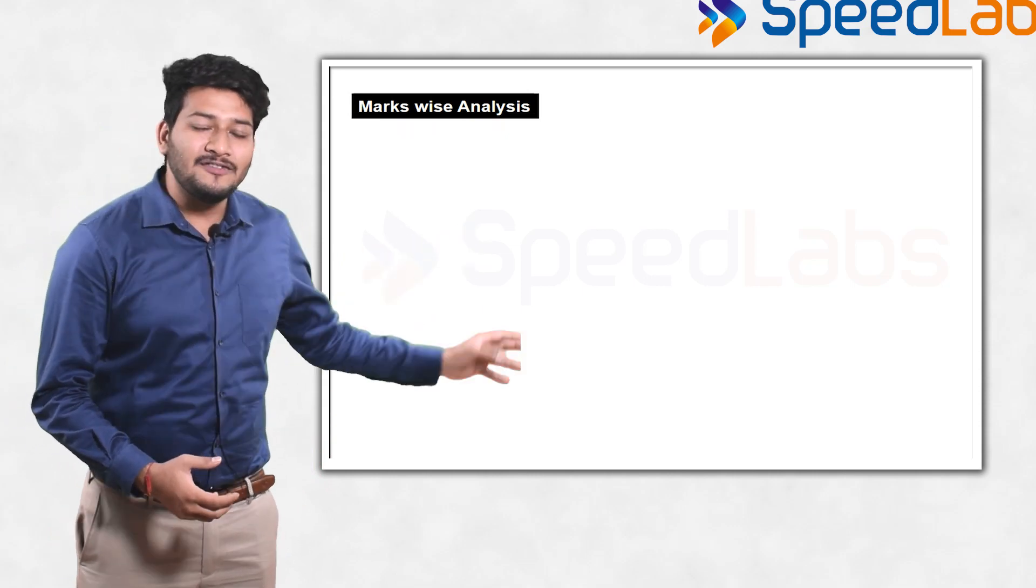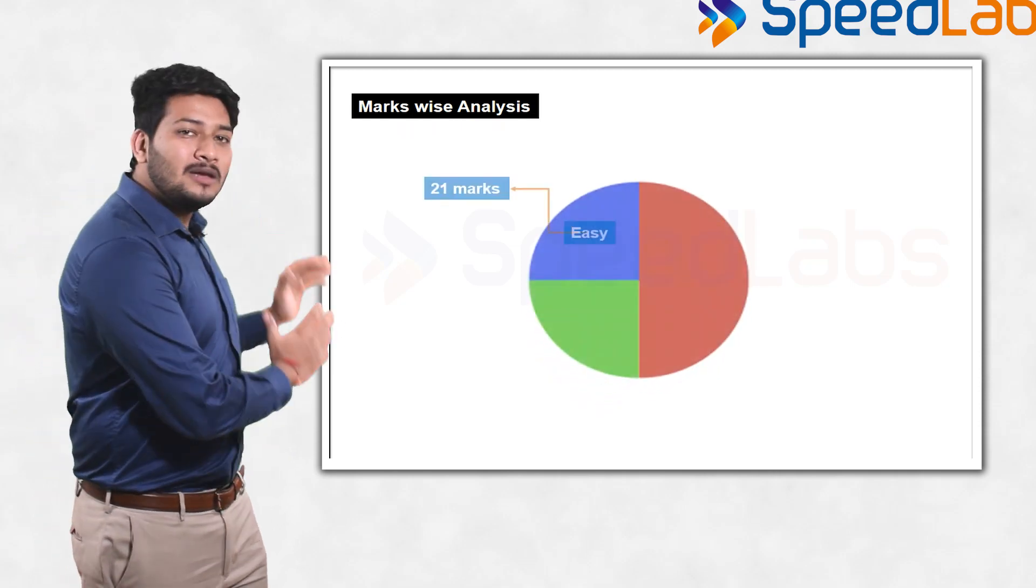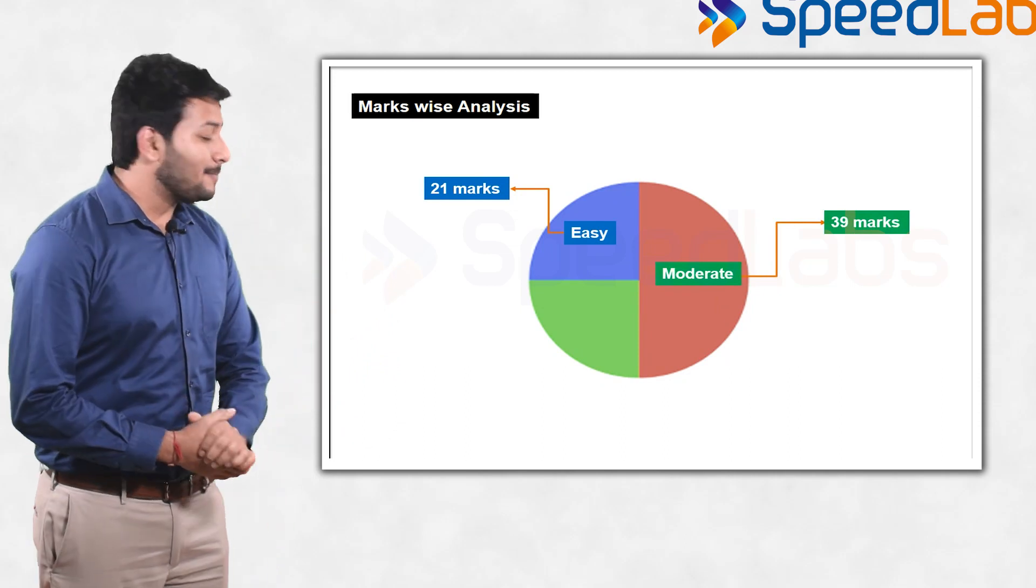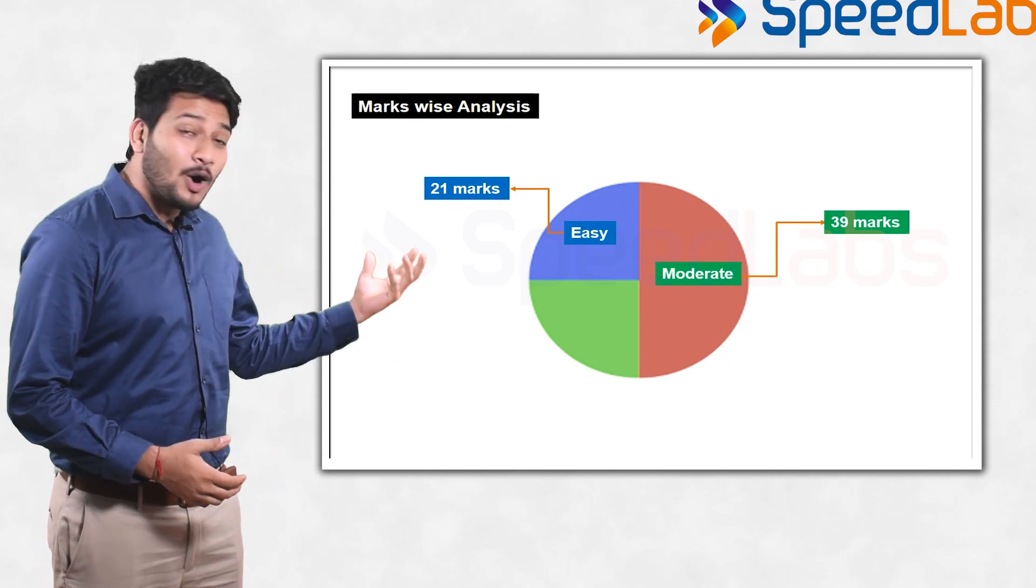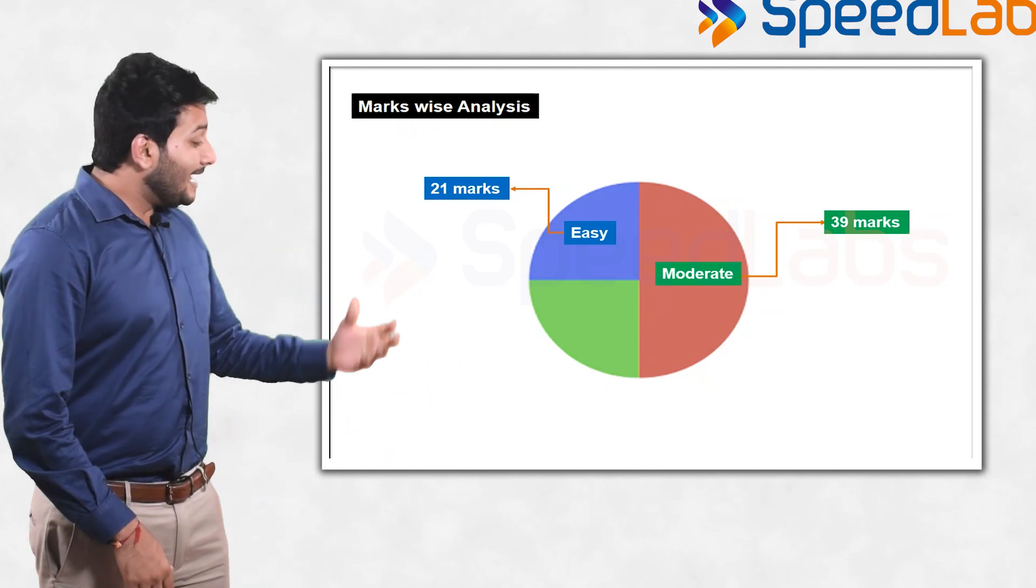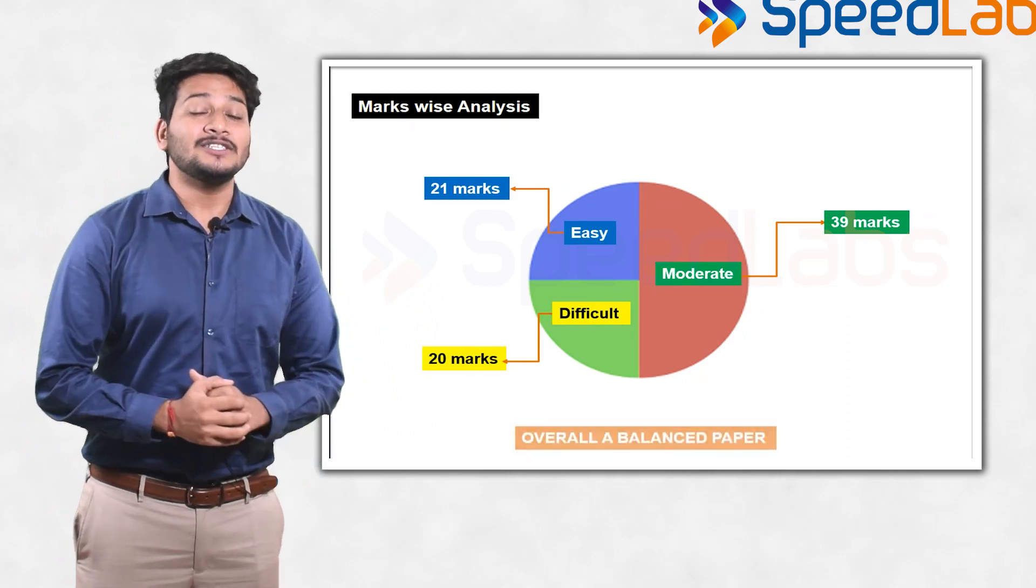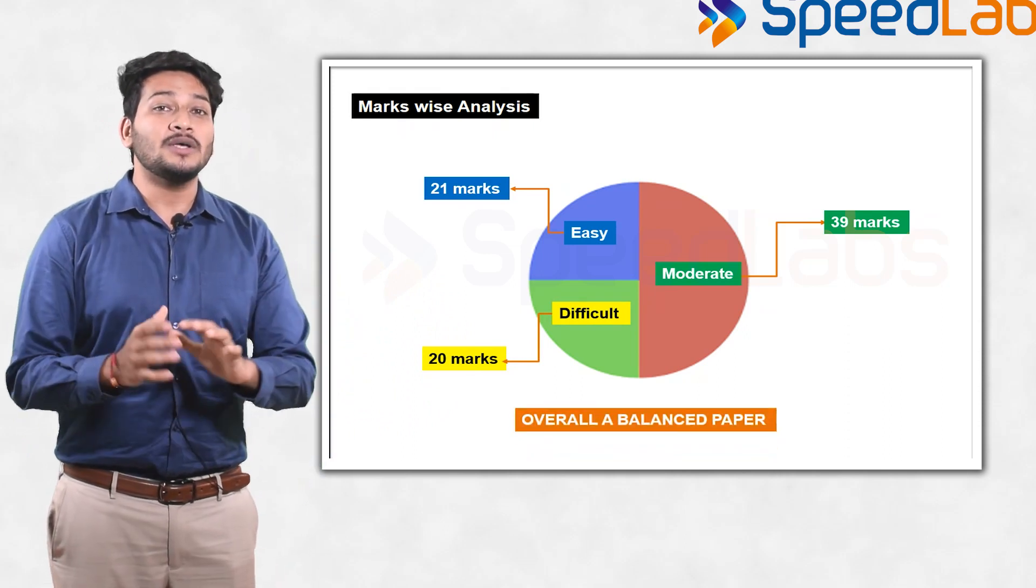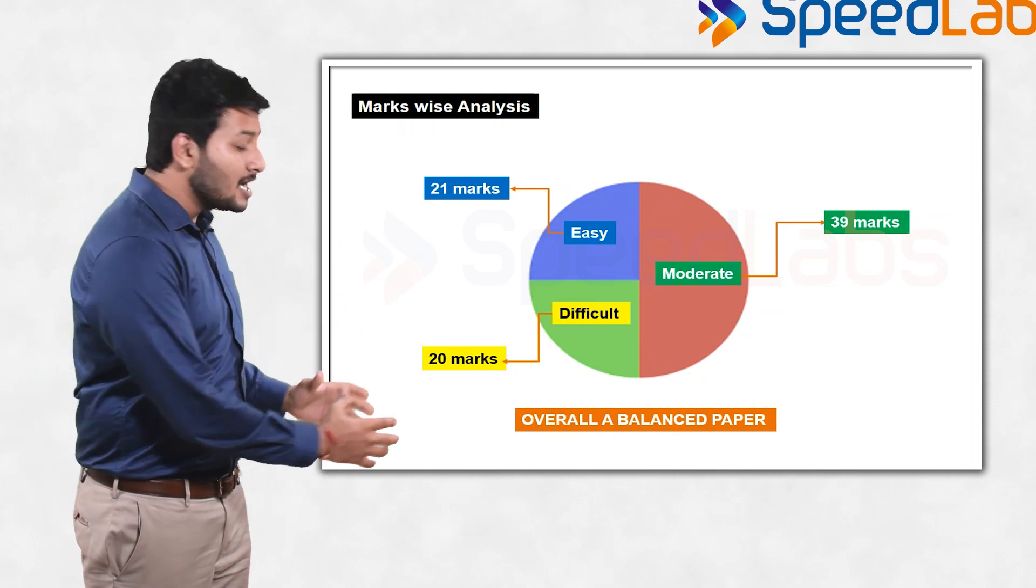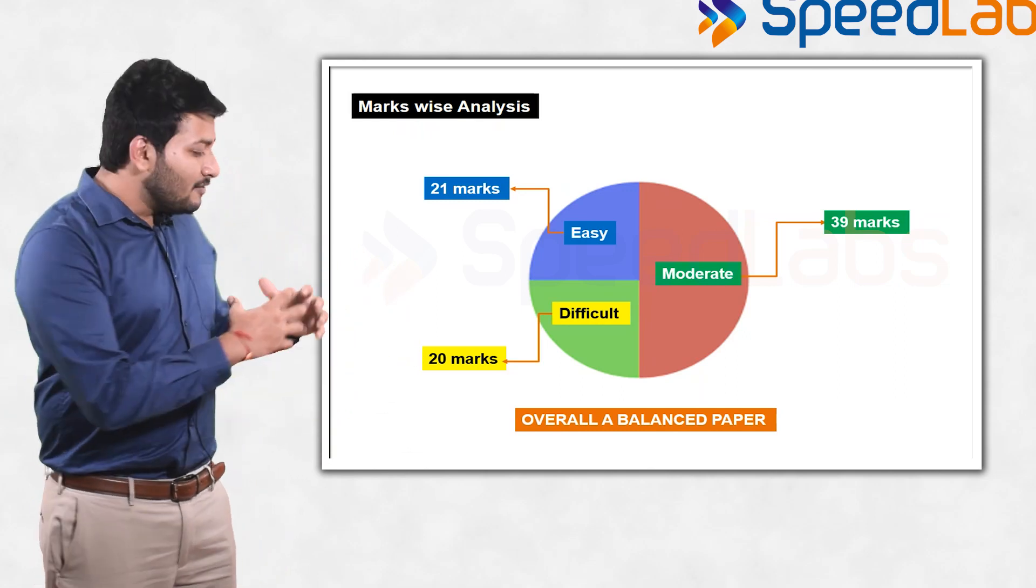Now let us see the distribution of total marks among easy, medium, and difficult sections. Out of 80 marks, 21 marks I've kept in the easy section, 39 marks I have kept in the moderate section, and 20 marks were allotted to the difficult section. This is why I told you it was a balanced paper, because a balanced paper is made such that half the marks are moderate or average level, then 25% to the easy section and roughly 25% to the difficult section.